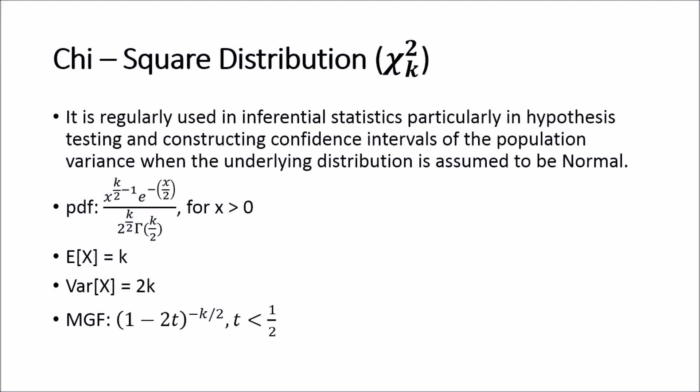The chi-squared distribution is regularly used in inferential statistics, particularly in hypothesis testing and constructing confidence intervals for the population variance when the underlying distribution is assumed to be normal. In a later series on mathematical and inferential statistics, I will cover how we arrive at this result and how we use the chi-squared distribution. For now, we will focus on the properties of the chi-squared distribution.